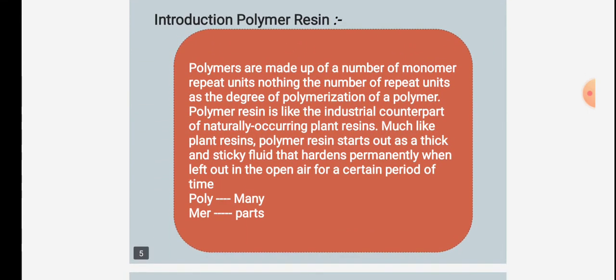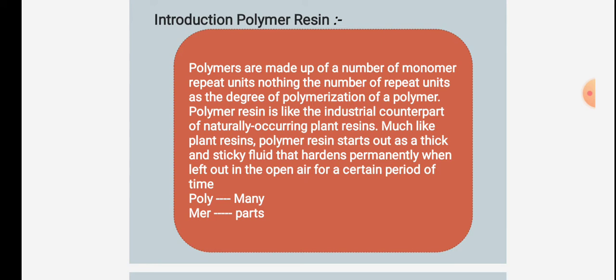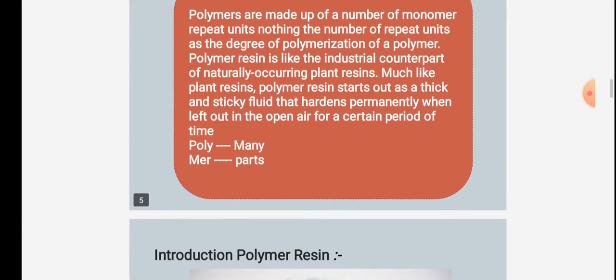Introduction to polymer resins: Polymers are made of a number of monomer repeat units. The number of repeat units is known as the degree of polymerization. Polymer resins are like the industrial counterpart of naturally occurring plant resins. Much like plant resins, polymer resins start out as a thick and sticky fluid that hardens permanently when left out in open air for a certain period of time. 'Poly' means many and 'mer' means parts.